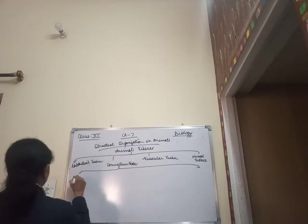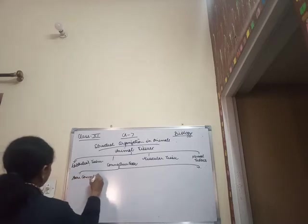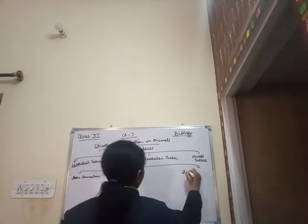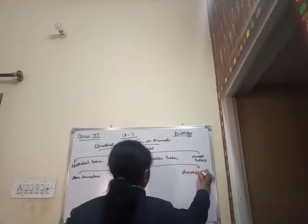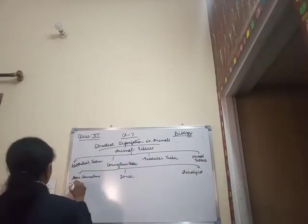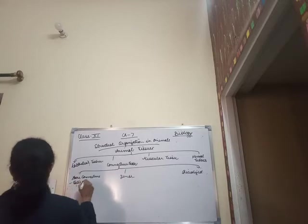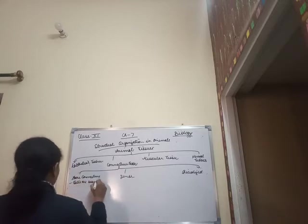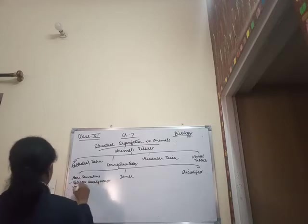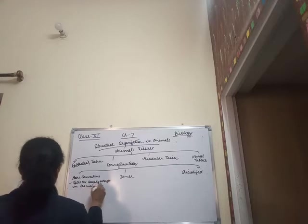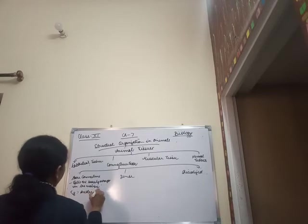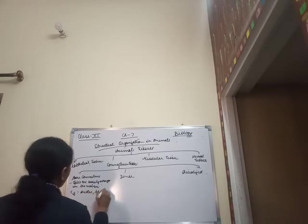Connective tissue can be classified as loose connective tissue, dense connective tissue, and specialized connective tissue. In loose connective tissue, the cells are arranged very loosely in the matrix. Examples include areolar tissue and adipose tissue.